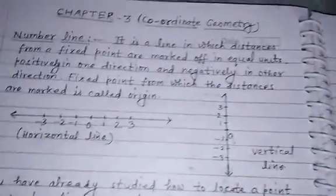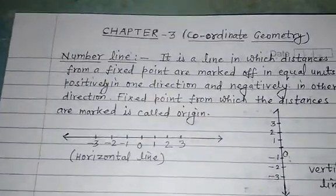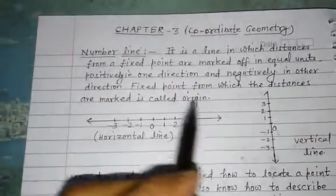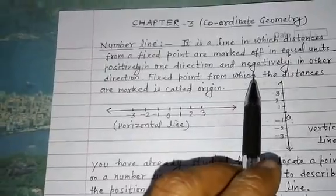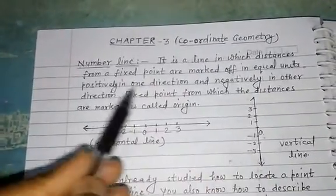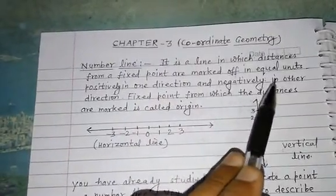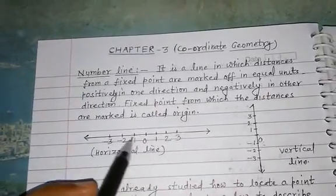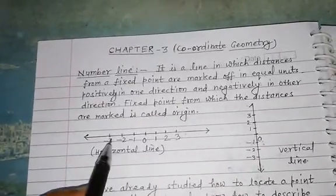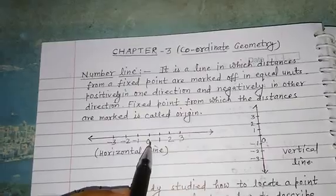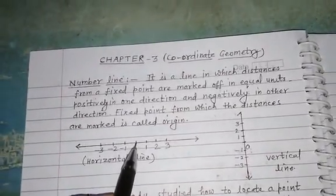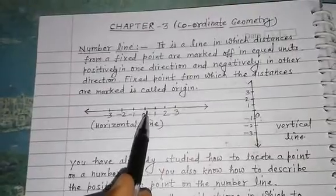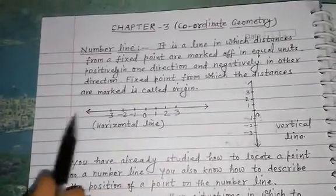Here, you have studied about the number line. What do you mean by number line? It is a line in which distances from a fixed point are marked off in equal units, positively in one direction and negatively in the other direction. We place numbers at an equal distance from a fixed point, and this fixed point is called the origin, represented by zero. One direction shows positive and the other shows negative direction.